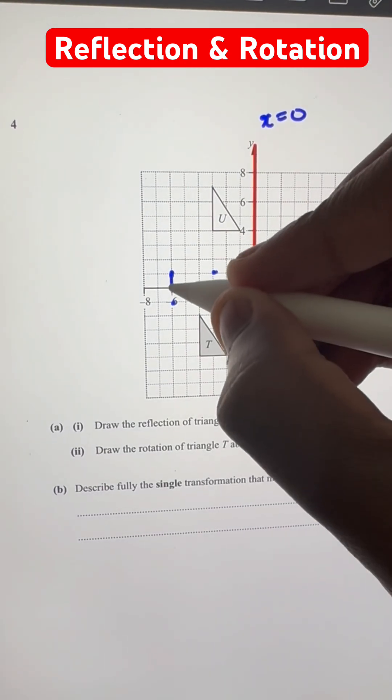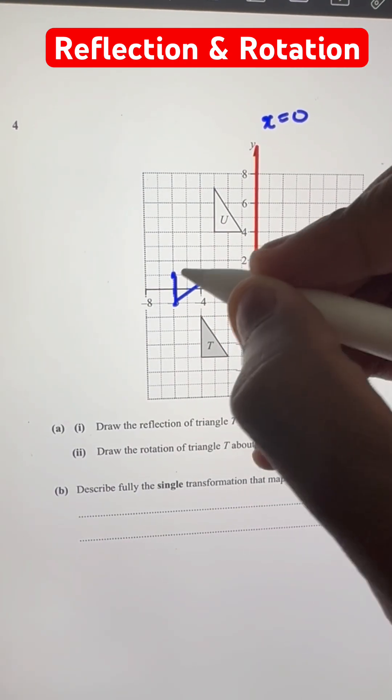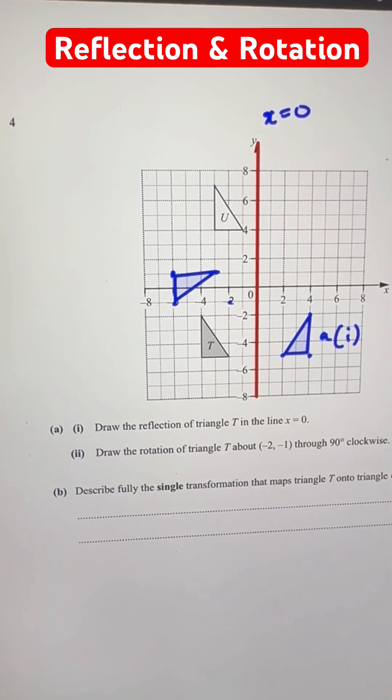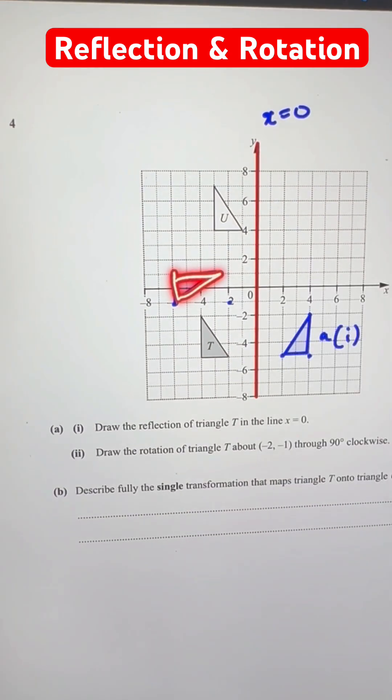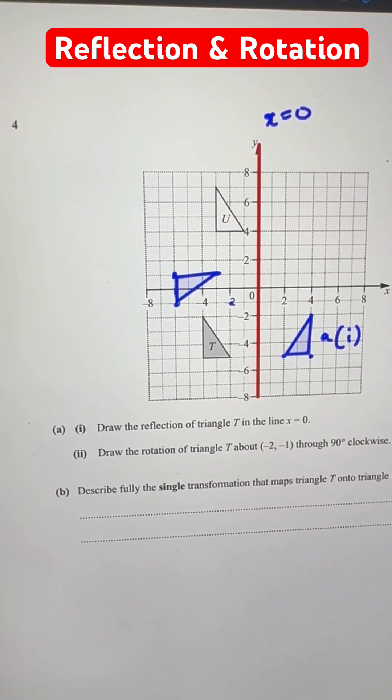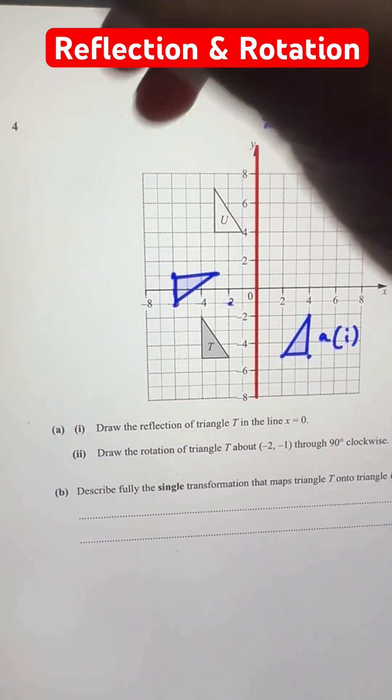So we can just join the dots. Of course, don't connect the center with this. This one is a separate point. Only connect these three. And we get our triangle over here, which is our answer for part 2.